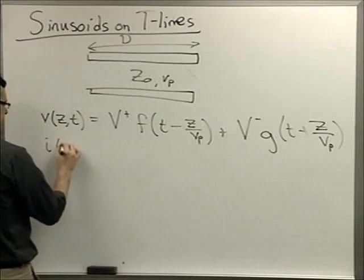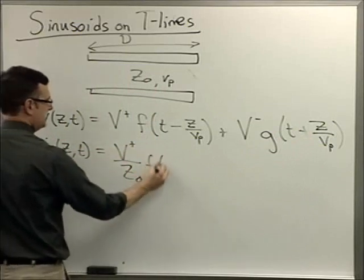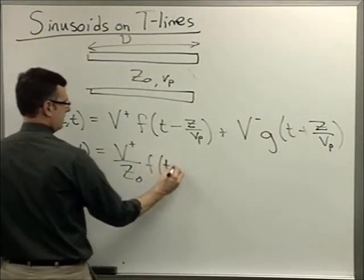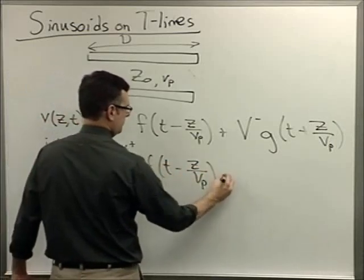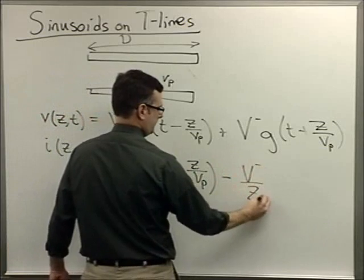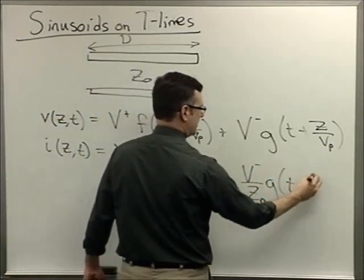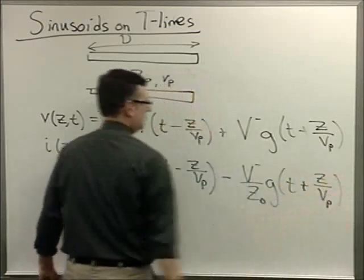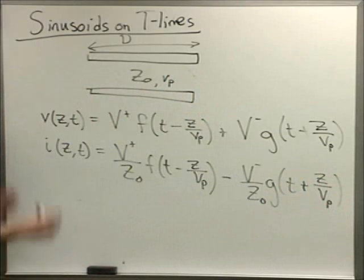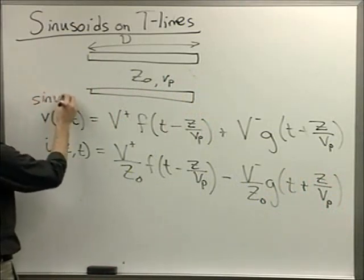And where I have voltage, I also have to have current, divided by the intrinsic impedance. Okay, this is what we learned the very first week of class. And this is the generic solution. Now, let's say we have sinusoidal excitation.